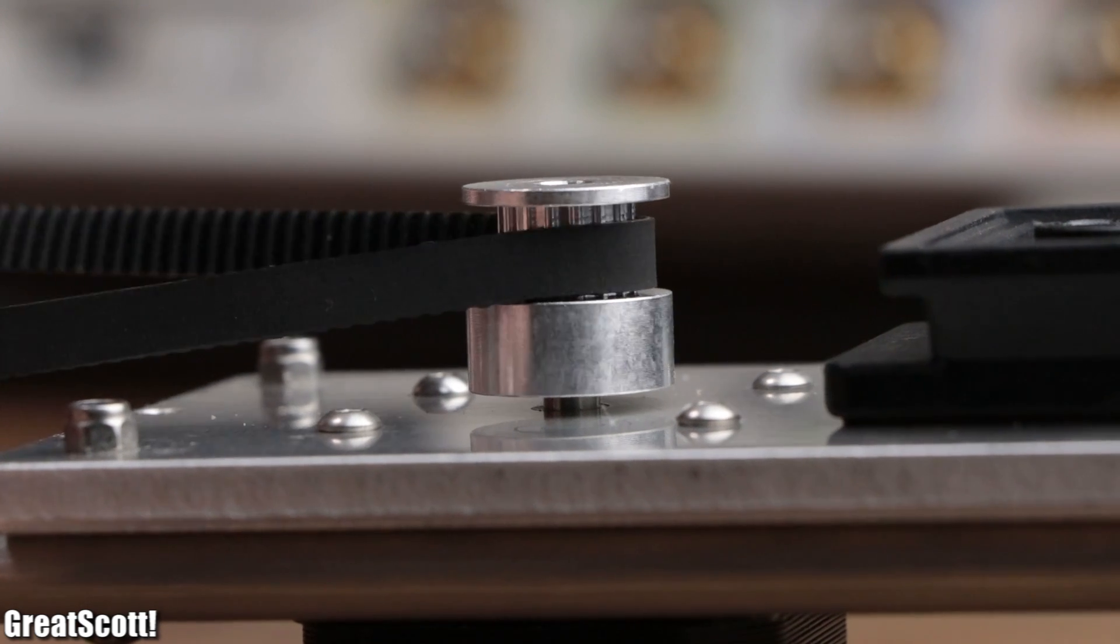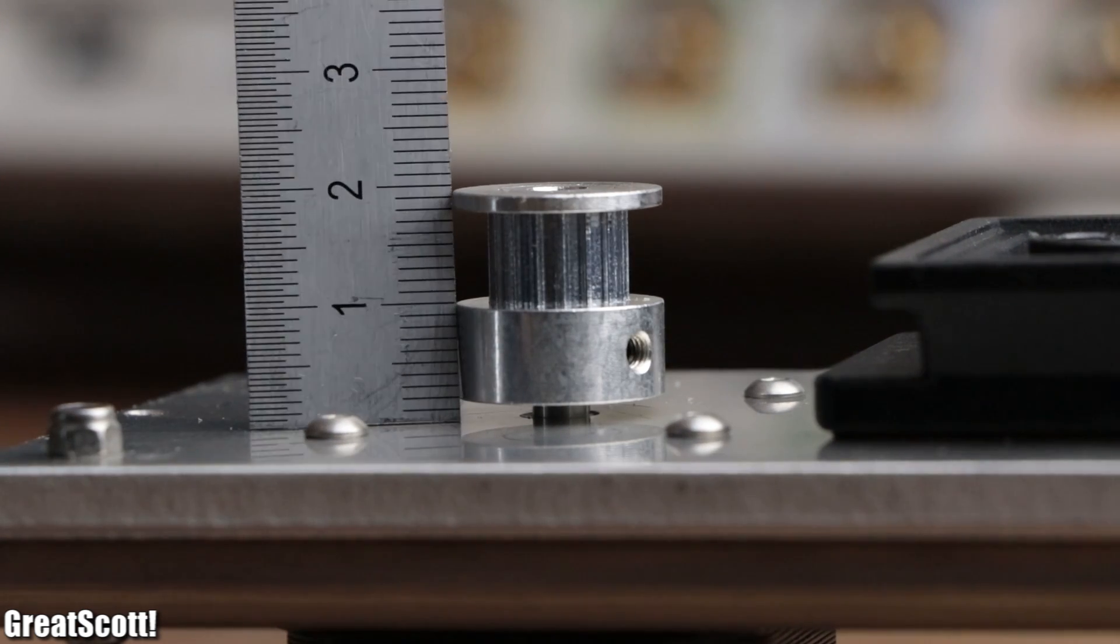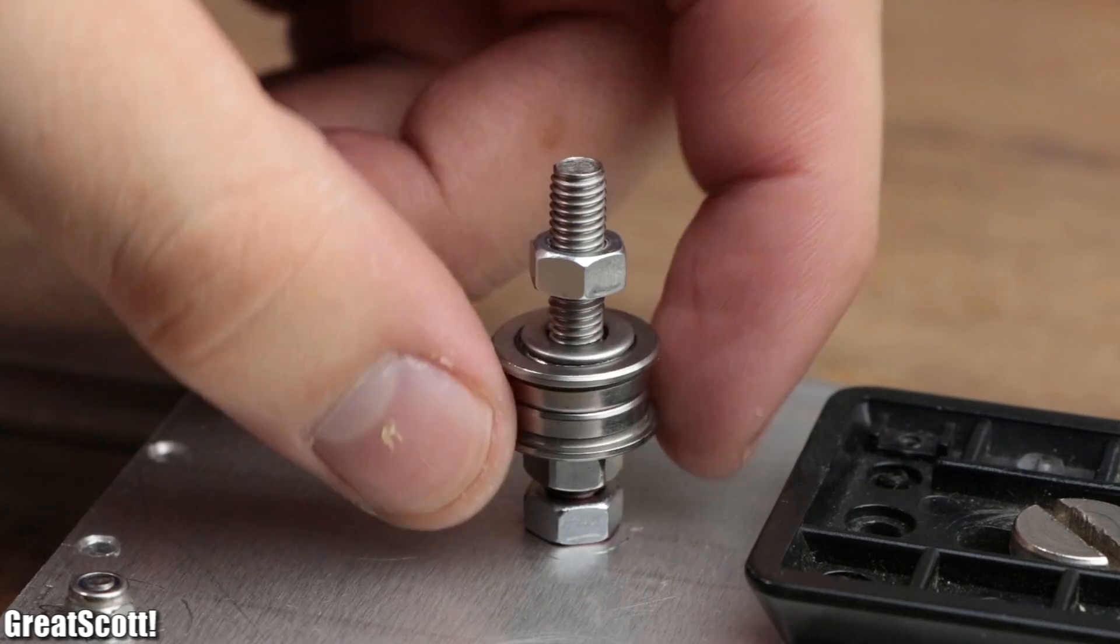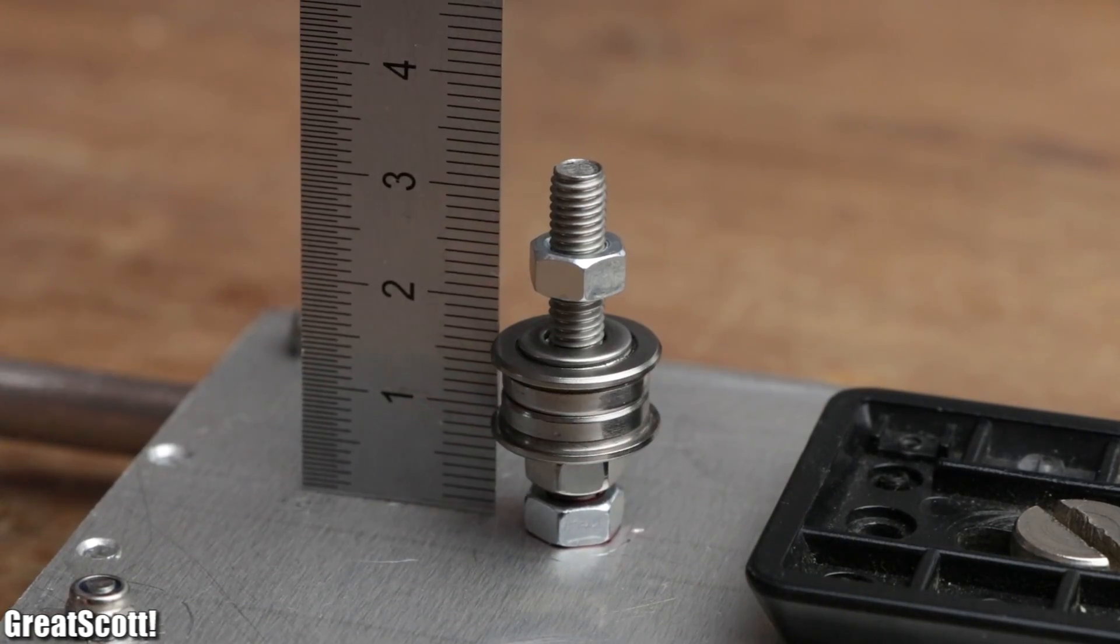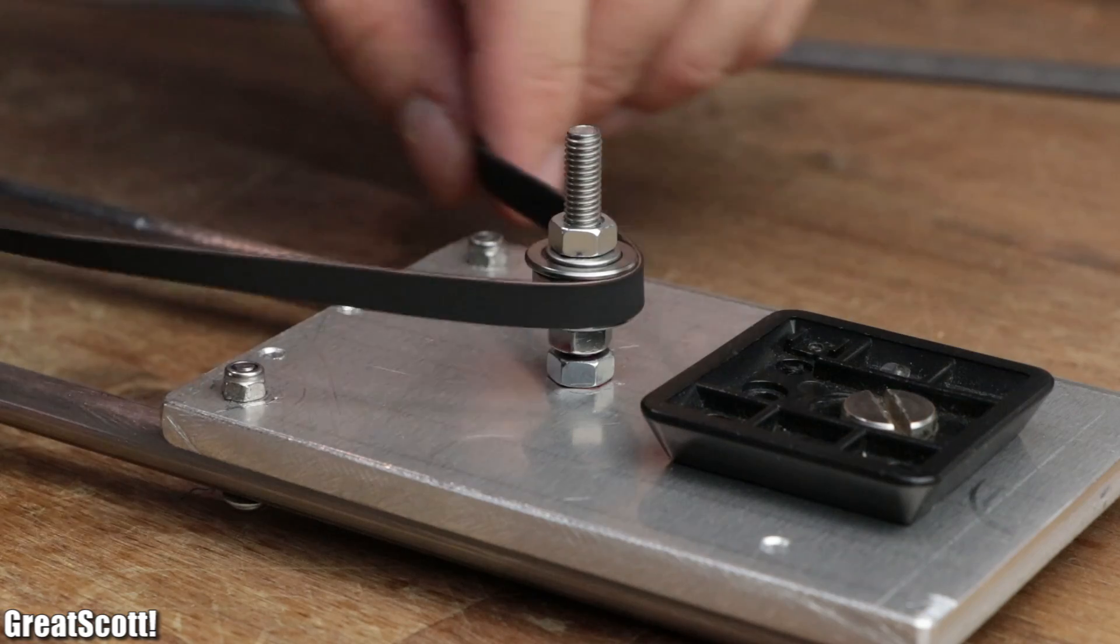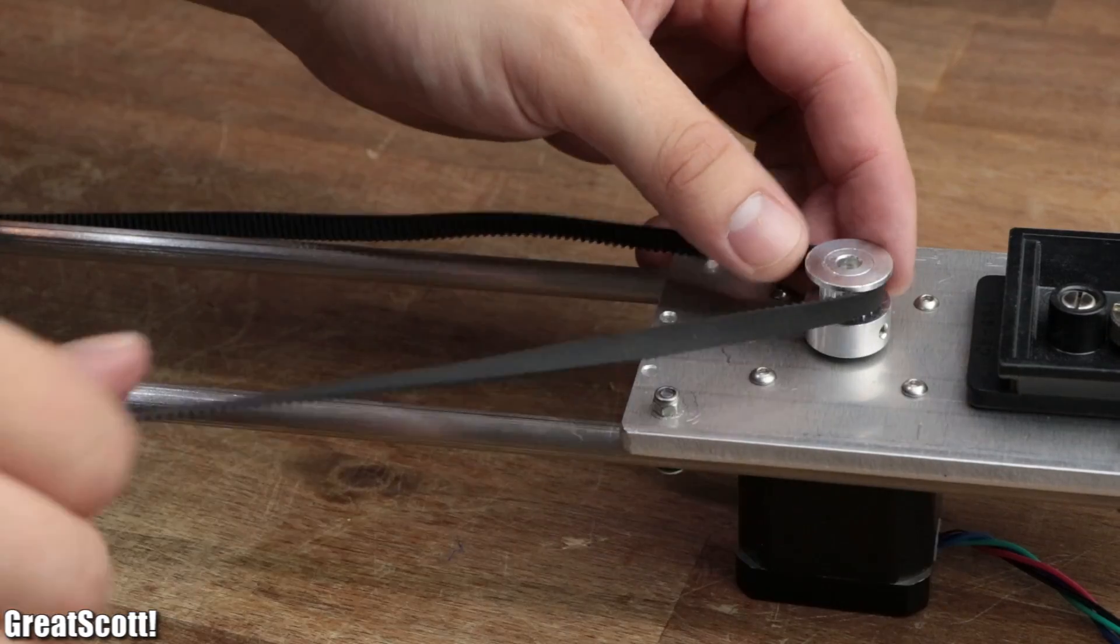Since the pulley had a distance of roughly one centimeter from its platform, I fine-tuned the location of the bolt bearing to achieve a similar distance. The only missing component for the motor system was the timing belt.